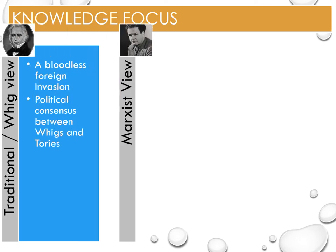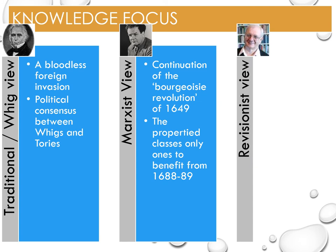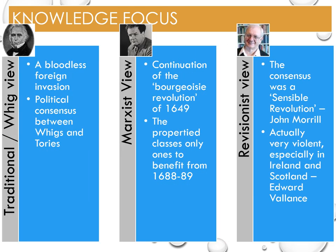Marxist historians, such as Christopher Hill and Lawrence Stone, see the revolution as a basic continuation of the bourgeois revolution of 1649, in which the propertied and landed classes overthrew a monarch who restricted their economic growth. Therefore, for Marxists, the revolution was for the benefit of the propertied, monied classes. The most current view - that of the revisionists, such as John Merrill and Edward Valance - builds on the consensus of Whigs and Tories and labels the revolution a 'sensible revolution.' Many also overturned the label of 'bloodless' by exploring the Williamite War and Jacobite uprisings as a result of the revolution, which were very violent, especially in Ireland and Scotland.